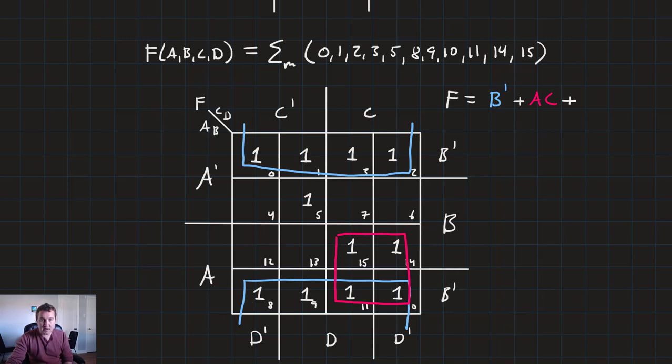And the last thing here is we've got this term at five. Now, there's not a lot we can do here. Don't forget, we cannot combine five, one, and nine despite the fact that they're adjacent because the groups have to be powers of two, so we cannot have a group of three. So, the best we can do for term number five here is create a group of two right there with five and one. So, we'll see from that that it fits inside A naught and C naught and D. And once we've grouped in all the ones, now we know we're finished. And this function simplifies to just B naught or A and C or A naught and C naught and D.